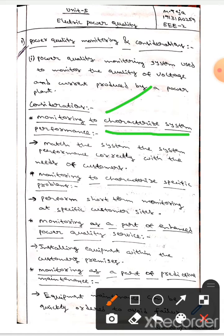The first one is monitoring to characterize system performance. We should match the system performance correctly with the needs of customers.